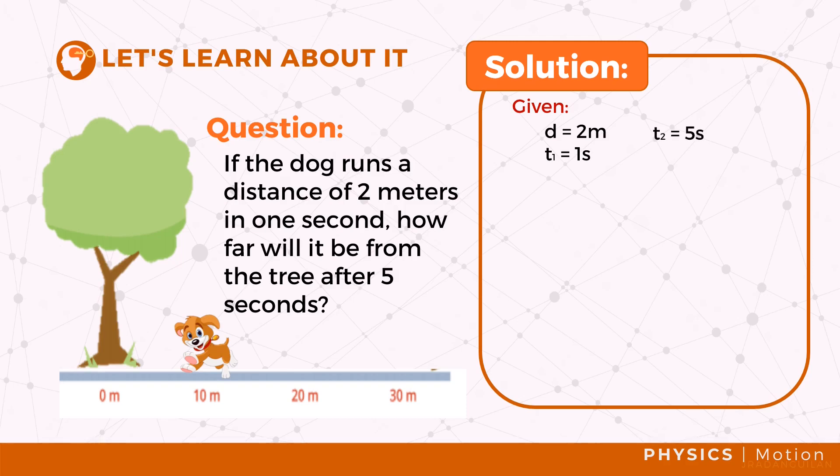We are asked to identify the distance covered after five seconds, but to get that we need to know the rate of its motion. We can solve this by dividing the distance to the time it traveled. By substituting the values for both distance and time, we can now compute for its velocity which is equal to two meters per second.